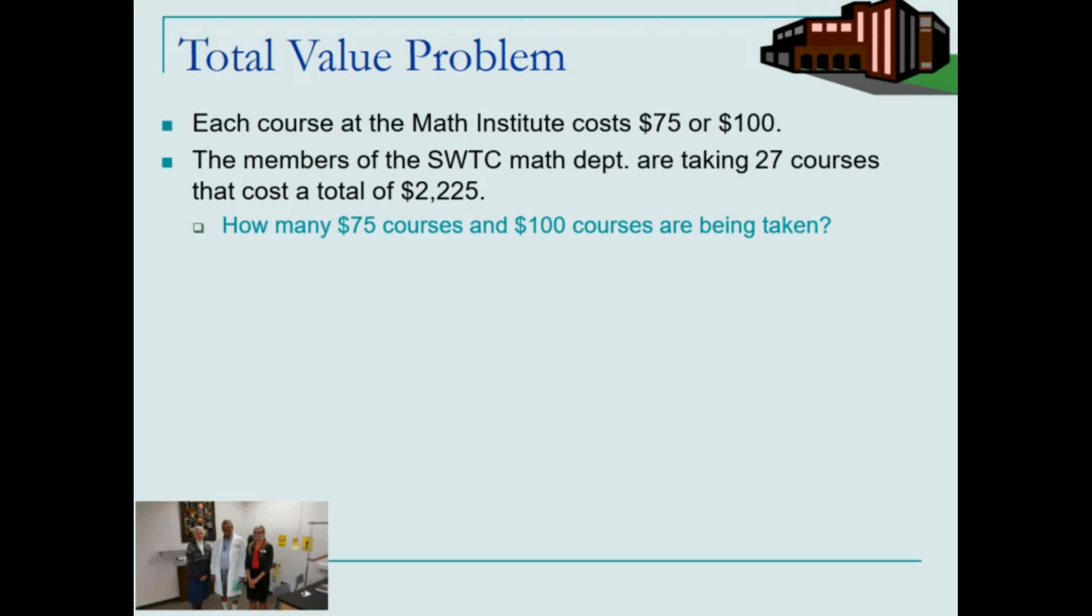We have two unknowns here, the unknowns being how many $75 courses and how many $100 courses.